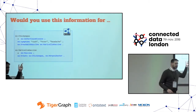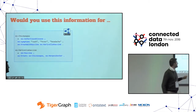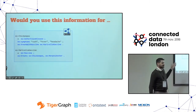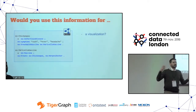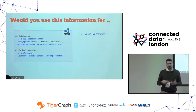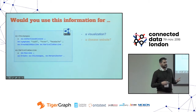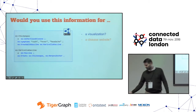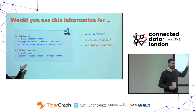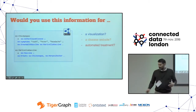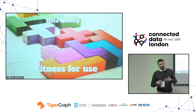Another example: chickenpox is an infectious disease with symptoms rash, fever, and headache as text, and can be treated with the varicella vaccine, which also treats herpes zoster. Would you use this information to build a visualization or a disease website? Probably yes. Would you use it for automated medical treatment software — so if it finds you have a headache it gives you a vaccine? Probably not. The point is: data quality is fitness for use. The same information can be perfectly good for one use case but completely insufficient for another.